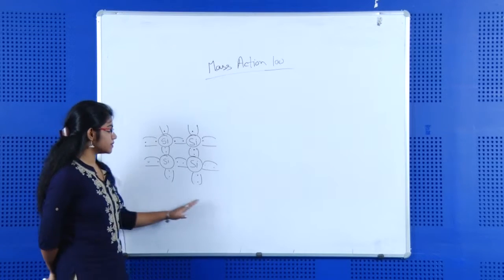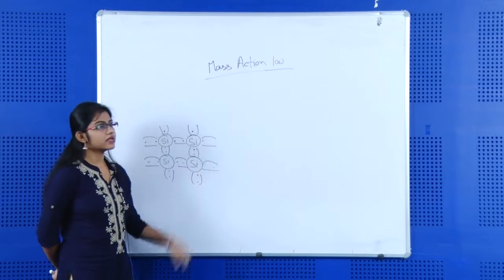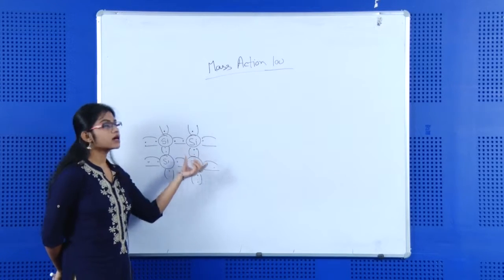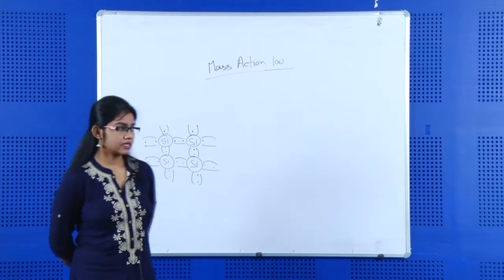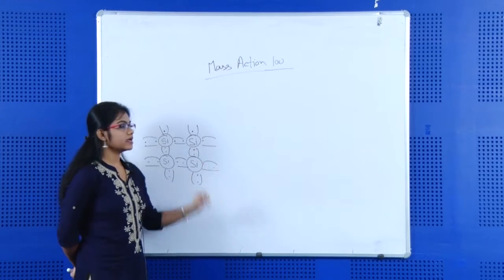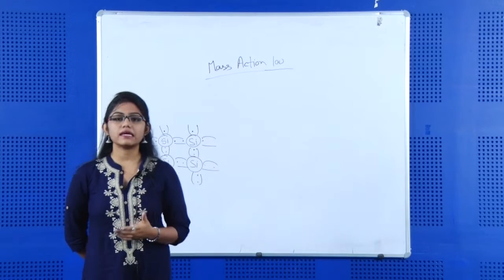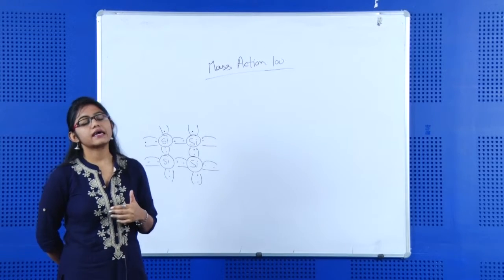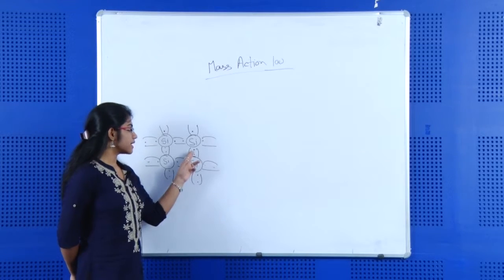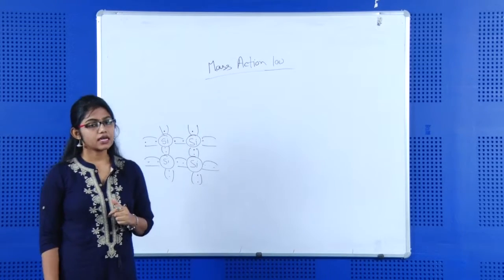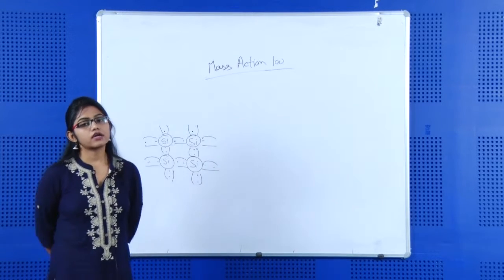Now suppose for this pure semiconductor or intrinsic semiconductor, these electrons are bound electrons because they are in the covalent bond. At 0 Kelvin temperature, these electrons are bound, but if we give external energy — or at room temperature, that is 300 Kelvin — these electrons will gain enough energy and move from the valence band to the conduction band for conduction.